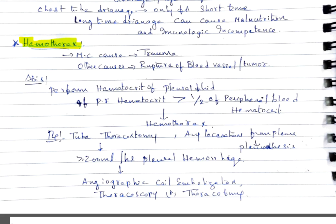Hemothorax: most common cause is trauma. Other causes can be rupture of blood vessel or from tumor. Diagnosis: perform hematocrit of pleural fluid. If pleural fluid hematocrit is more than half of peripheral blood hematocrit, it's hemothorax. Tube thoracostomy can be done. If there's greater than 200 ml per hour of pleural hemorrhage, angiographic coil embolization or thoracoscopy thoracotomy should be done to prevent blood loss.